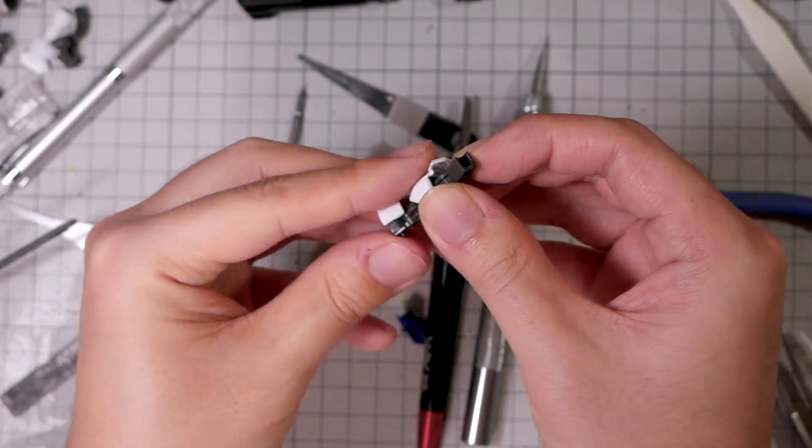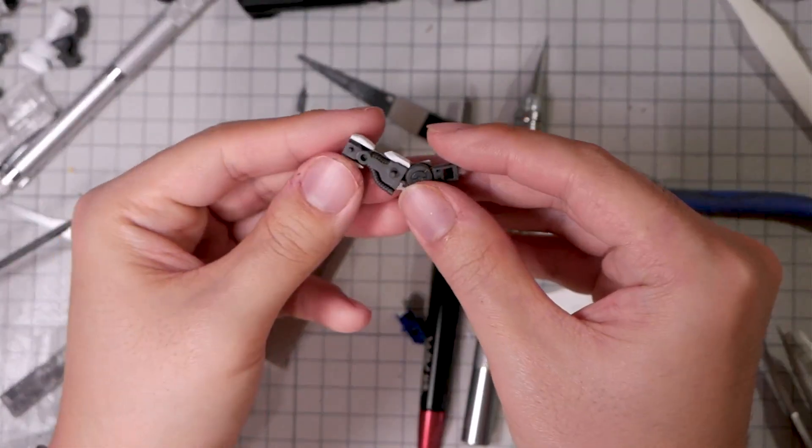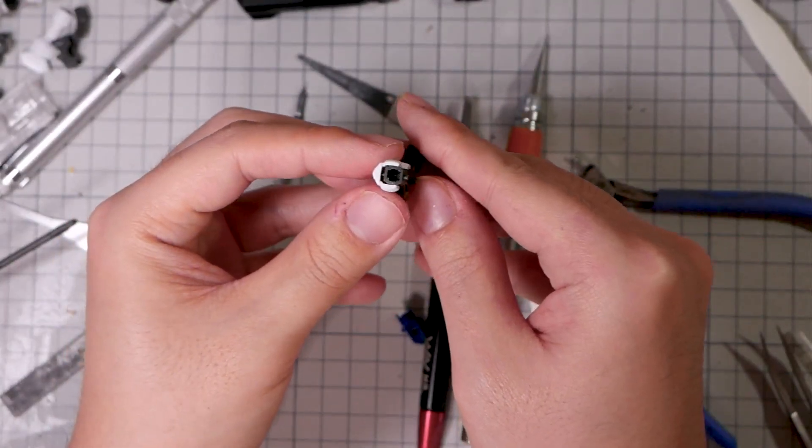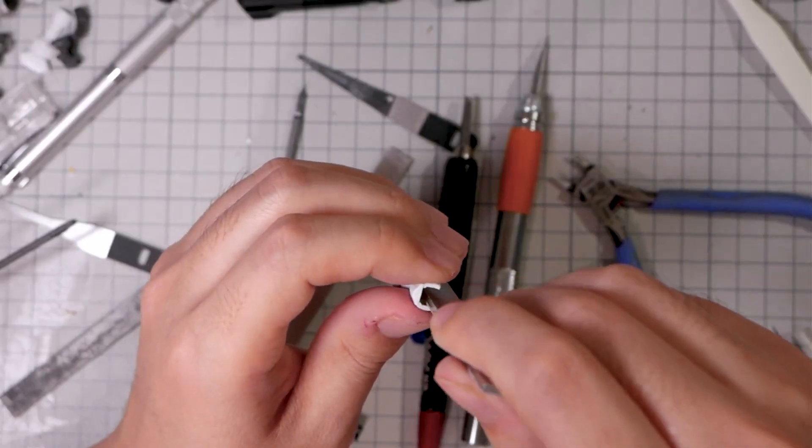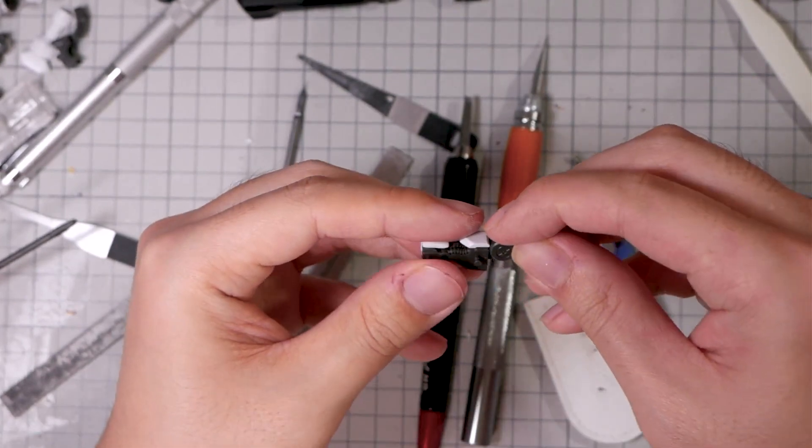Now we can test if our arm frame will go inside. As you can see, there's a bit of an interference. I then sand the side to make sure the border is smooth, and sand the interfering bit. Now the arm goes in just fine.